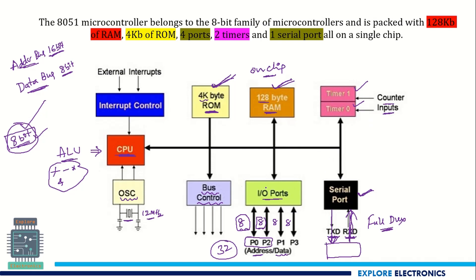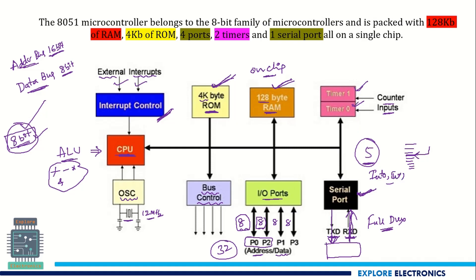There is also an interrupt controller, which is very important. When execution is going on and an external process interrupts it, that is handled by the interrupt controller. There are five interrupts in the 8051: two are external interrupts (INT0 and INT1), two are software-generated interrupts related to the timers, and one is through the serial port. So, totally five interrupts are there.